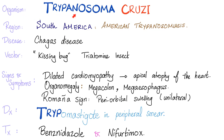What's the organism? Trypanosoma cruzi. What's the endemic region? South America. That's why this disease is called American trypanosomiasis, as opposed to African trypanosomiasis. What's the name of the disease caused by Trypanosoma cruzi? It's called Chagas disease.